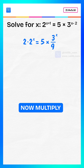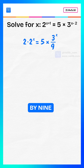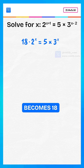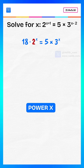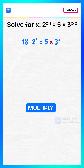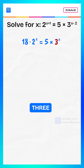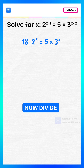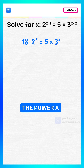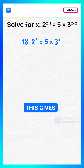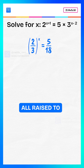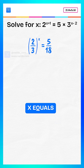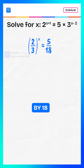Now multiply both sides by 9. This becomes 18 multiplied by 2 raised to the power x equals 5 multiplied by 3 raised to the power x. Now divide both sides by 3 raised to the power x.